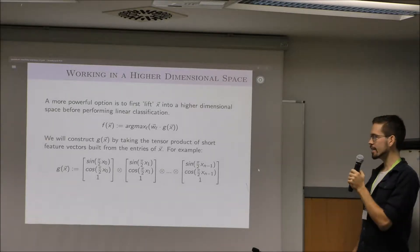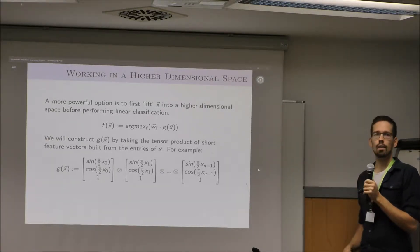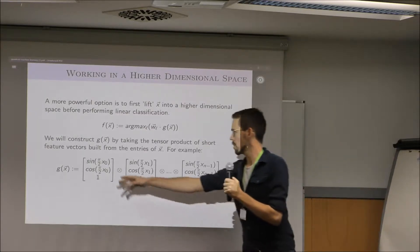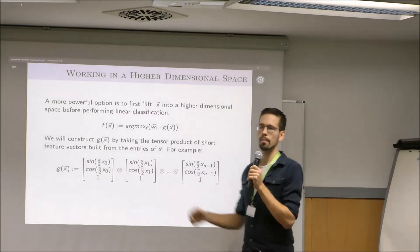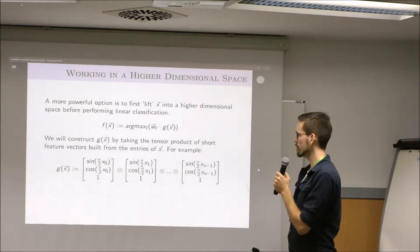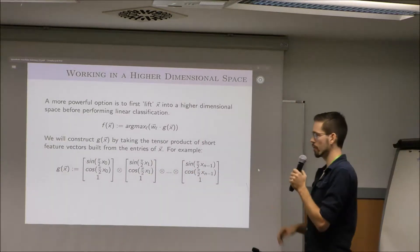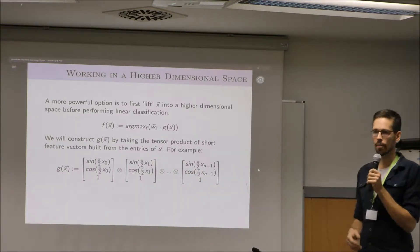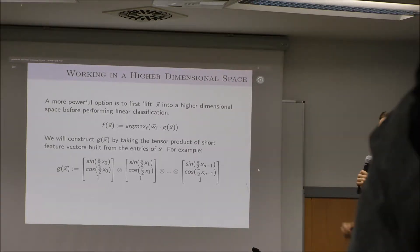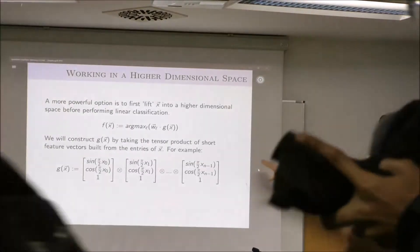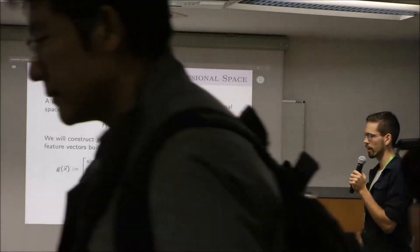We take each of the elements of that vector and we construct a short vector out of each of those, something like this, although there are a number of choices that you can make. And we take it as a product of all of those short vectors, and that gives us some interesting structure here. This is the thing that we're going to try to use for classification.